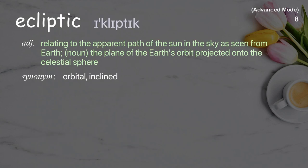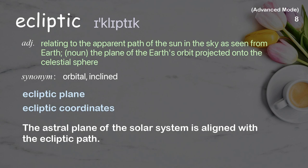Ecliptic: Relating to the apparent path of the sun in the sky as seen from Earth; noun, the plane of the Earth's orbit projected onto the celestial sphere. Examples: ecliptic plane, ecliptic coordinates. The astral plane of the solar system is aligned with the ecliptic path.